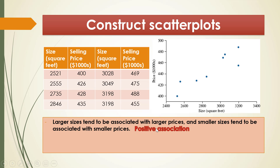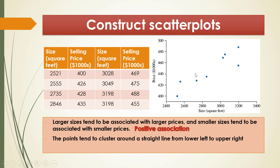We call this a positive association. By the way, the opposite of positive association is negative association — that means the larger size tends to be associated with the smaller prices, and the smaller size tends to be associated with the larger prices. On this example we see that the 8 points tend to cluster around an imaginary straight line from the lower left to the upper right, and linear means straight. So this is a linear association. Combining these two comments, the selling price and the size of the houses have a positive linear association.